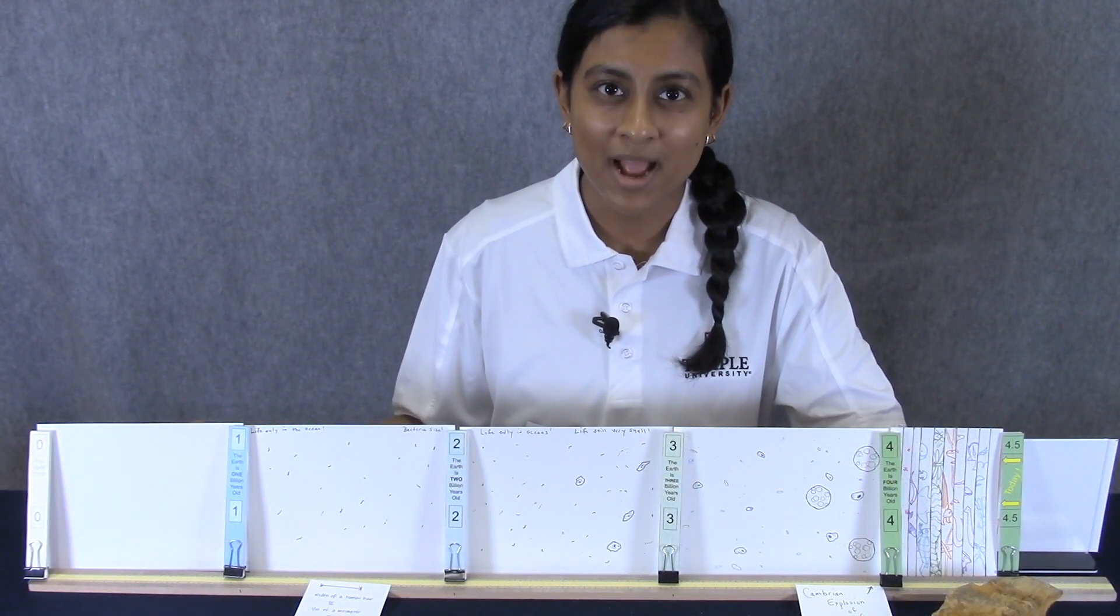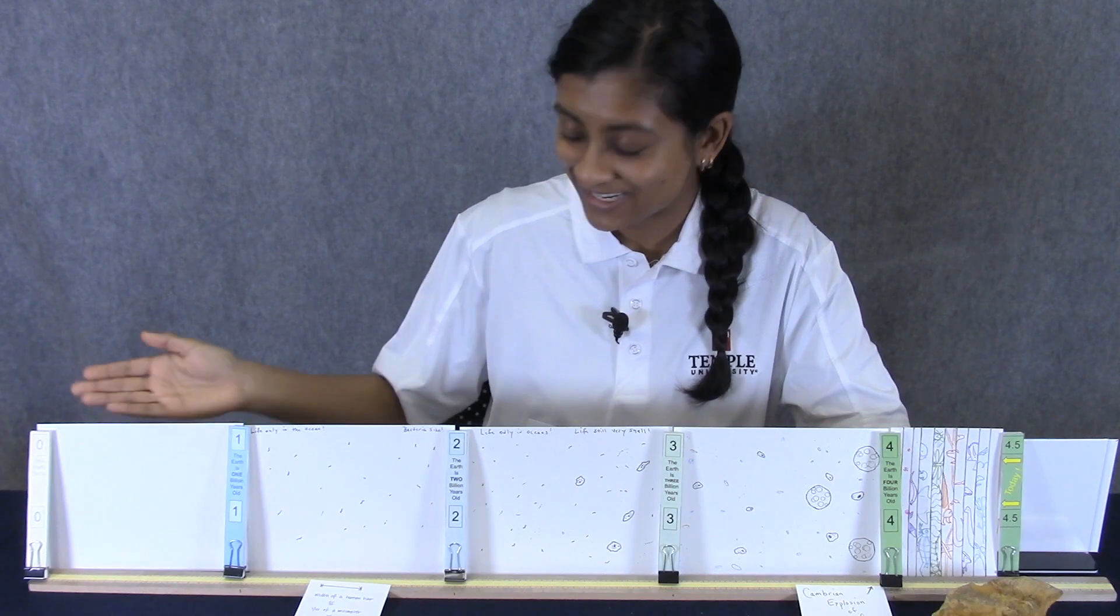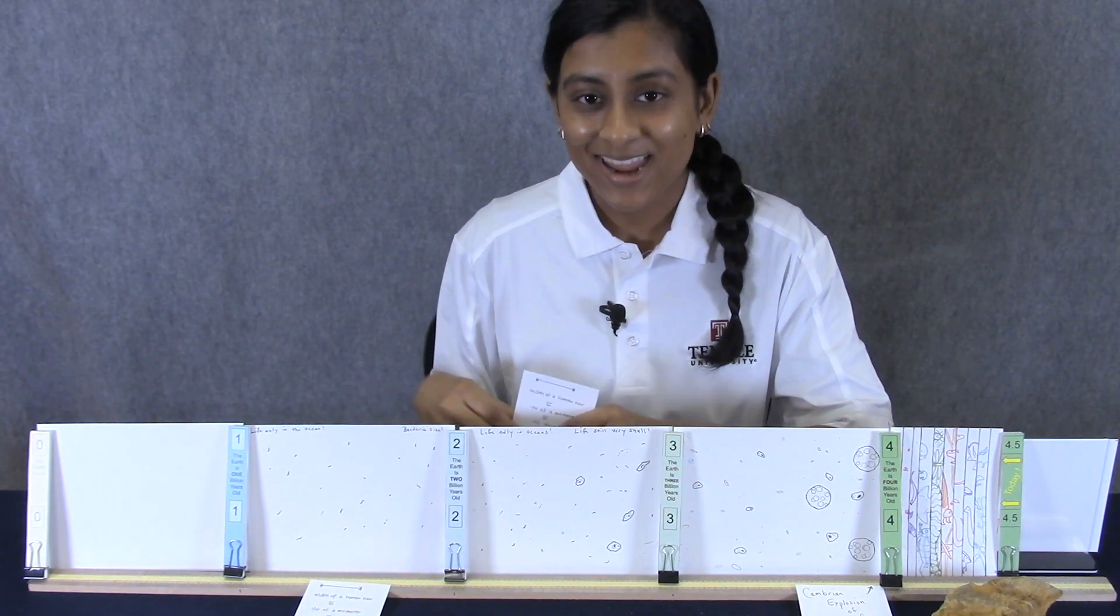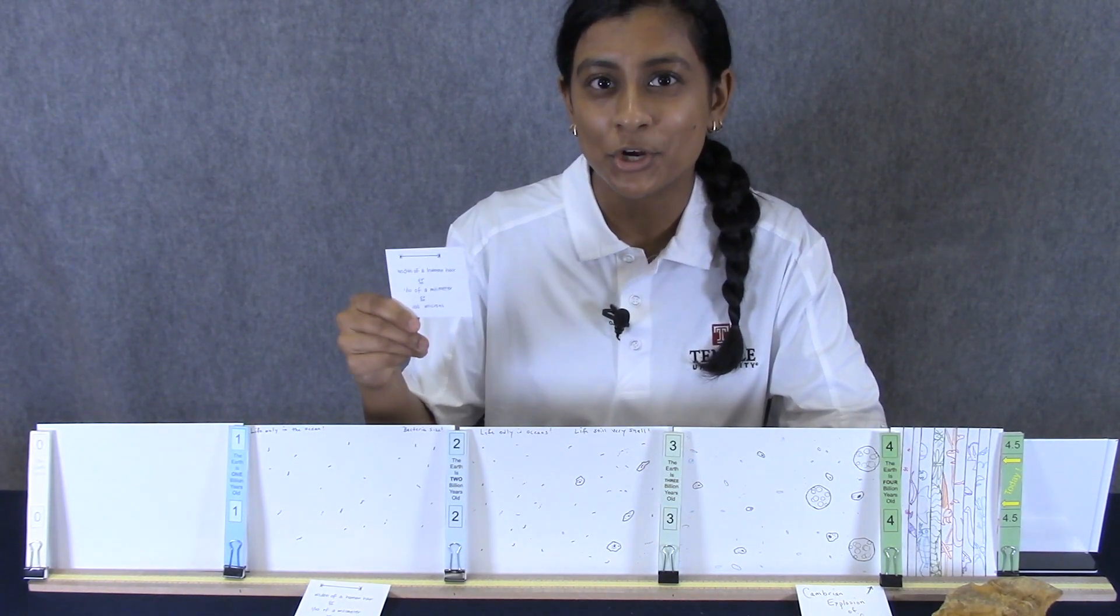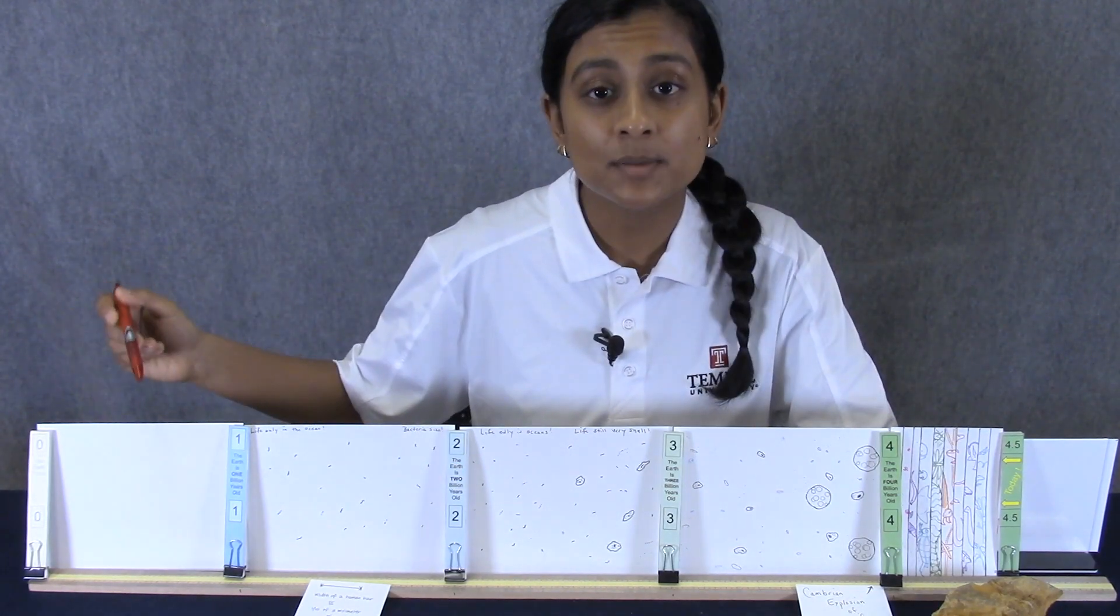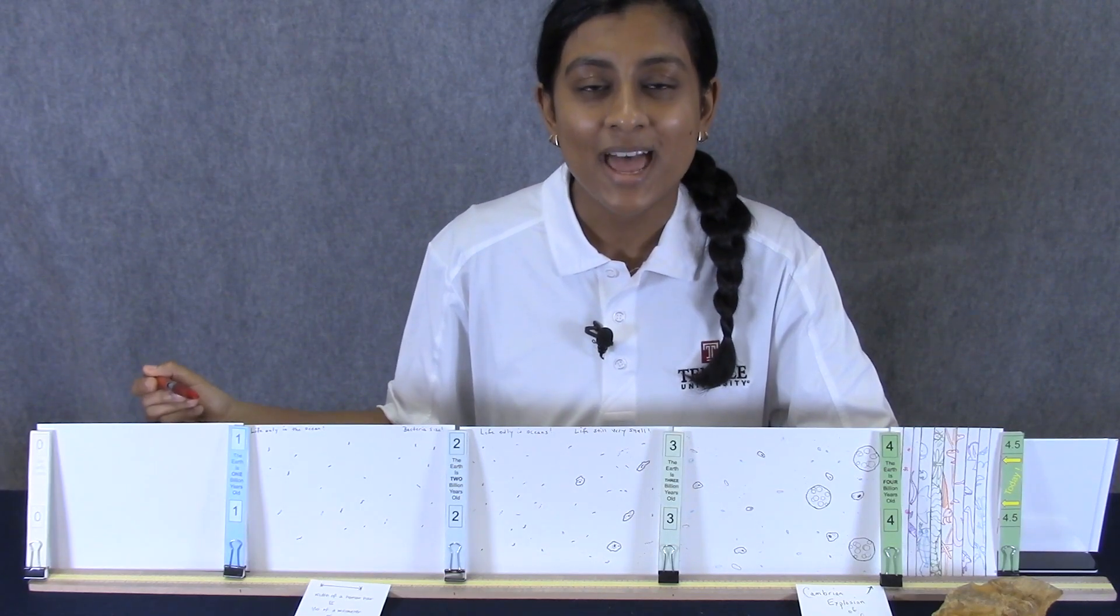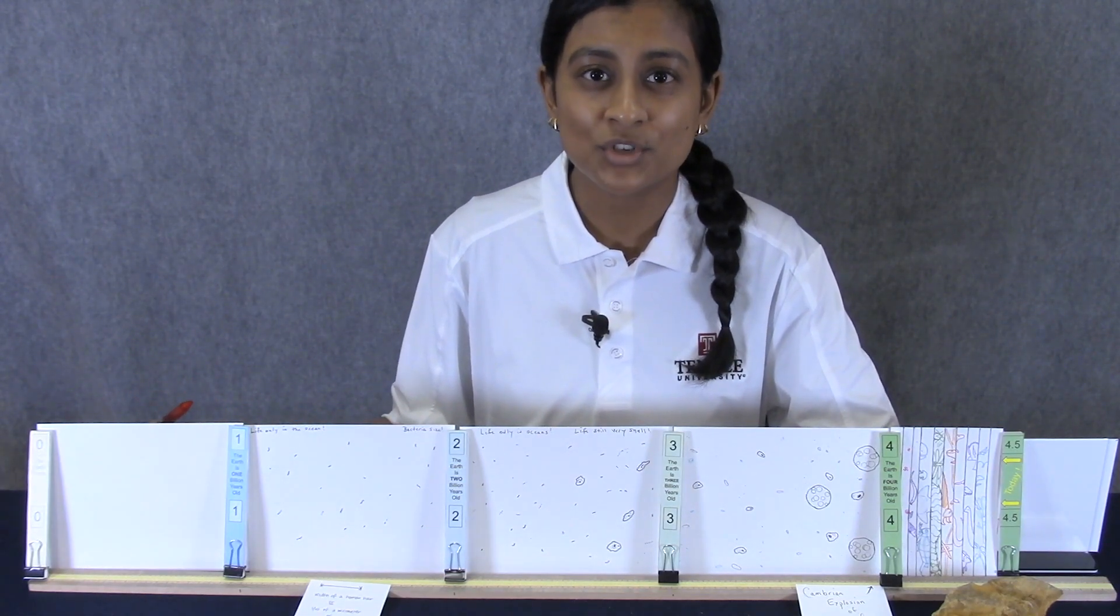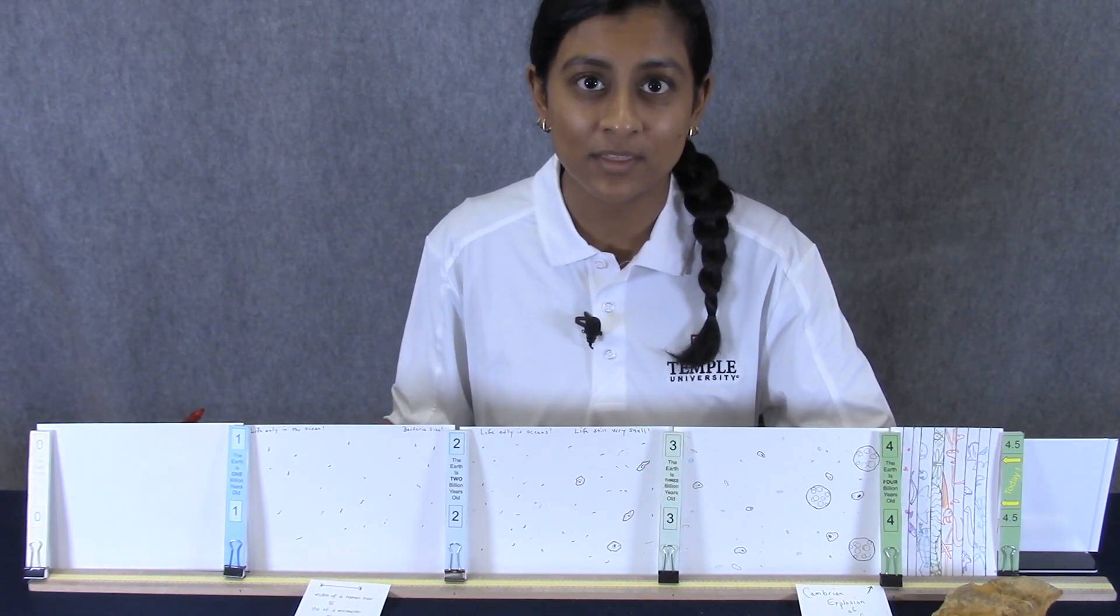We have marked some of the major milestones of life on our planet here on the timeline, and also have a scale to show you how small life was in the beginning. In the first billion years, the Earth was cooling down, and eventually water vapor was turning into liquid water and forming the oceans.